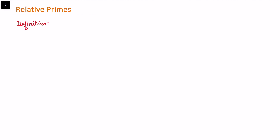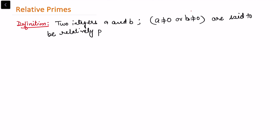In this video we'll be talking about relatively prime integers and based on that we'll be doing some elementary results. Let us start with the definition. Consider two integers a and b, not both equal to zero — so at least one of them should not be equal to zero. These are said to be relatively prime whenever the gcd of a and b is equal to one.